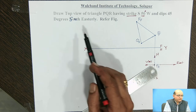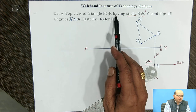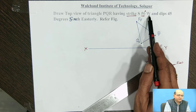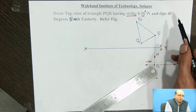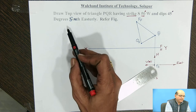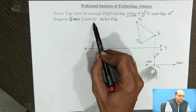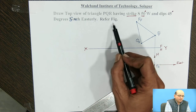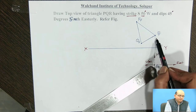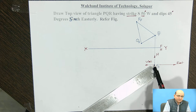The problem we have taken is related to the strike and dip completion of the projection when the front view of the plane is given and in the top view, one of the points is given. The question is: Draw the top view of the triangle PQR having strike south 50 degrees west and dip 45 degrees with the direction south easterly. The figure given is the front view of the plane PQR, and the top view for the PH point is given.